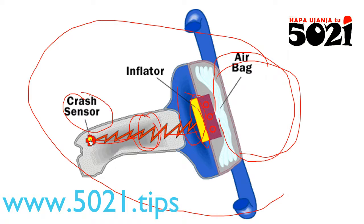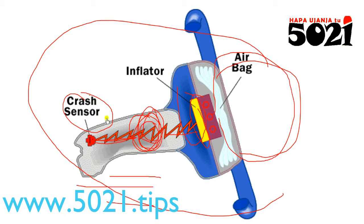The crash sensor signal passes through the control box because the control box will check what speed the car was traveling at, and also check for lateral acceleration. Sometimes the easy sensor passes through the control box for that verification.